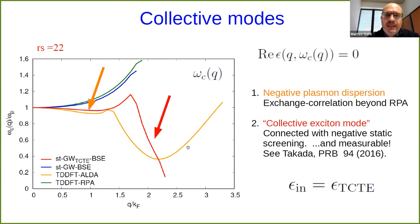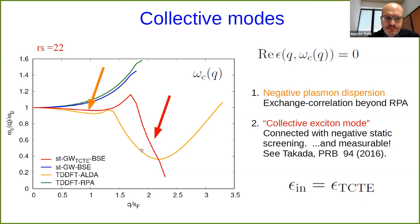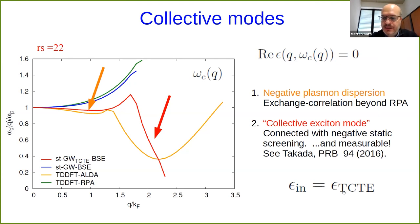Indeed, if we calculate the collective modes in this approach, we are able to reproduce both the negative plasma dispersion at low momentum transfers and the widely dispersing collective exciton mode — in agreement with the ALDA calculation. Both features are present only if we take into account this test-charge test-electron screening, not if we stay at the level of the RPA screened Coulomb interaction.